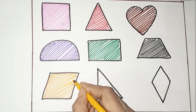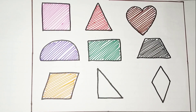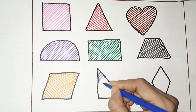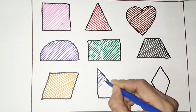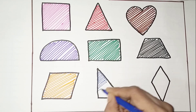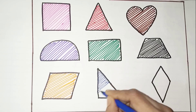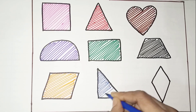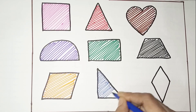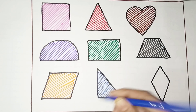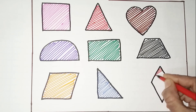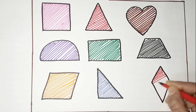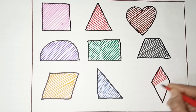Orange color. Right angle. Purple color Rhombus.